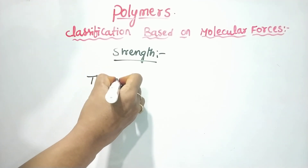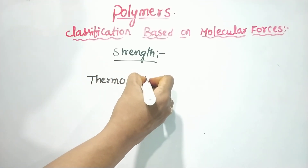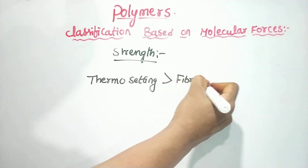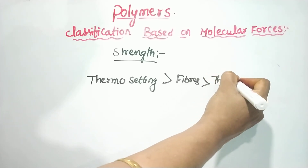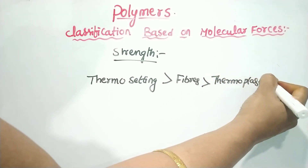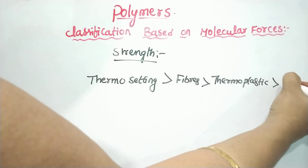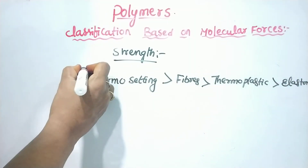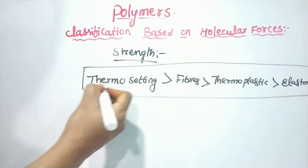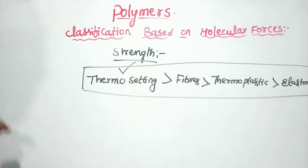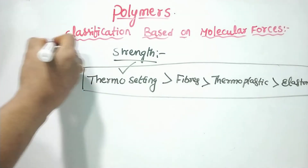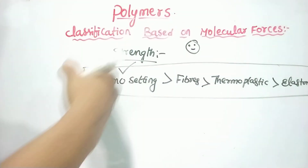To summarize, the four types of polymers classified based on molecular forces are: thermosetting polymers (highest strength), fibers, thermoplastic polymers, and elastomers (lowest strength). This is the classification of polymers based on molecular forces. Please subscribe to the channel.